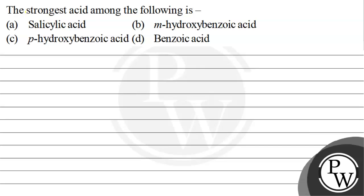Hello, children. Let's read this question. The strongest acid among the following is: (A) salicylic acid, (B) meta-hydroxybenzoic acid, (C) para-hydroxybenzoic acid, or (D) benzoic acid.